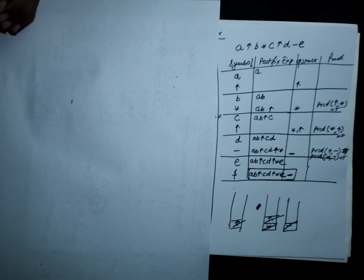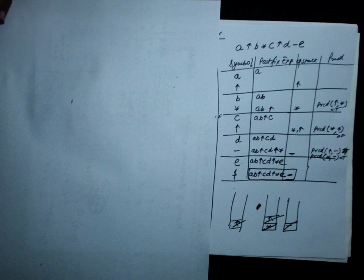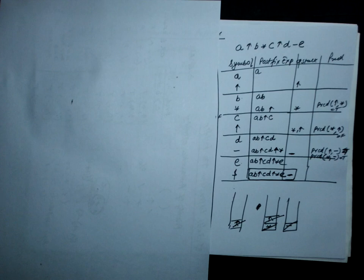To summarize the rules: if we have a false precedence, push the incoming operator on the stack. If the precedence keeps returning true, we keep popping symbols from the stack and adding them to the postfix expression. Once the precedence becomes false or the stack becomes empty, we stop popping and push the incoming symbol onto the stack.